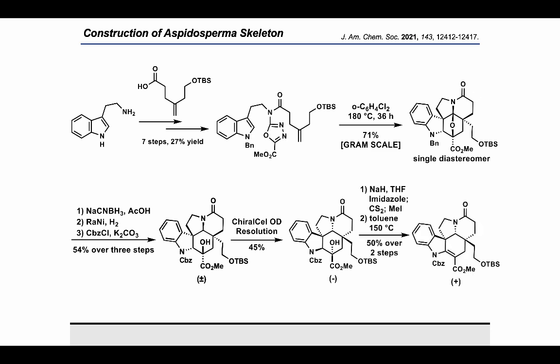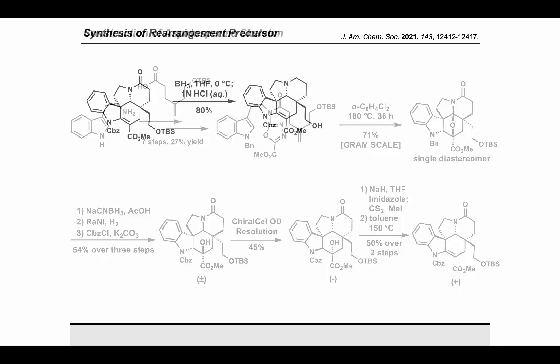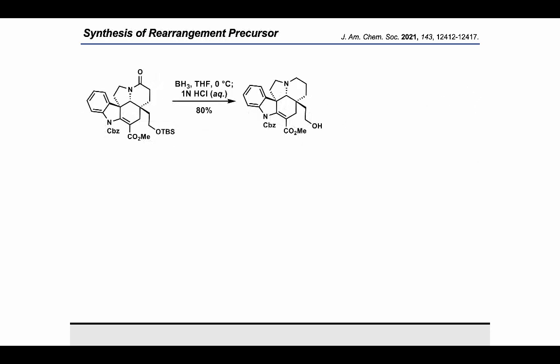This racemic compound was then chirally resolved by HPLC using a Chiralpak OD column to give 45% of the desired minus enantiomer. The tertiary alcohol was then eliminated by a two-step sequence: first converted to the corresponding methyl xanthate using sodium hydride followed by sequential quenching with carbon disulfide then methyl iodide. Heating this methyl xanthate affected the desired Chugaev elimination in toluene at 150°C to give the tetrasubstituted olefin in 50% yield over two steps.